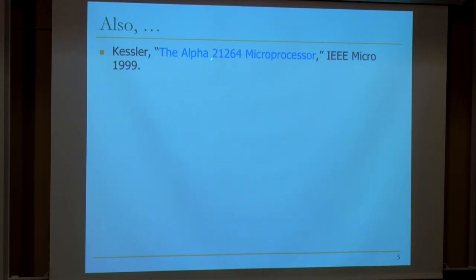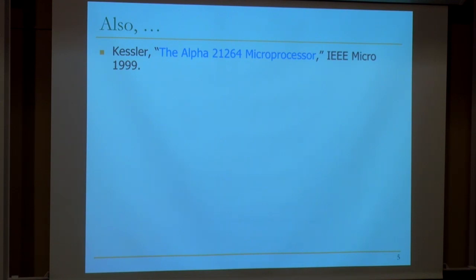I would also recommend reading the Alpha-21264 microprocessor paper, which puts a lot of the concepts we're going to discuss in the next five or six lectures together. The Alpha-21264 was Digital Equipment Corporation's flagship processor in the late 1990s — the fastest processor of its time. It incorporated pipelining, sophisticated branch prediction, out-of-order execution, and load-store prediction.